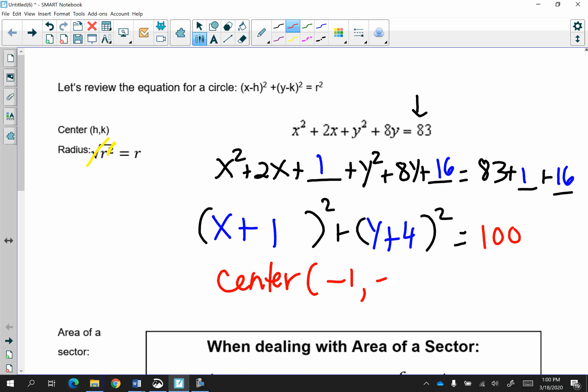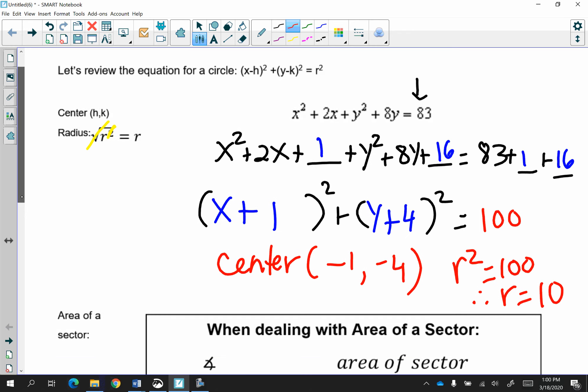Now we know we have to think opposite. Our center is negative 1, negative 4. Our radius squared is 100. Therefore, what do we want? We want the radius, which is the square root of 100, to be 10. That's the equation of a circle.